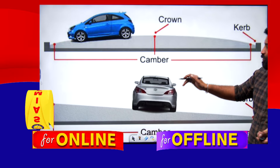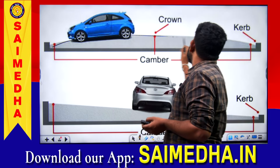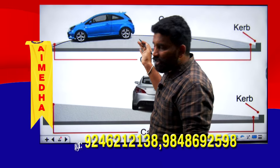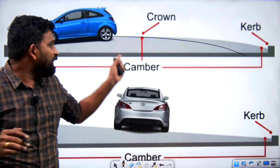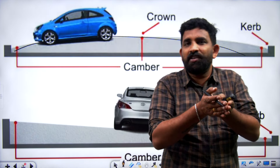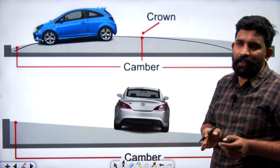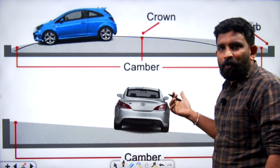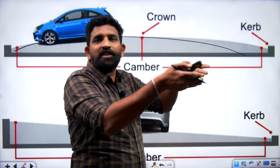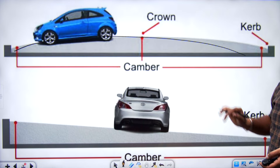We need to start from the cross-sectional elements. If you observe the image here, we will try to understand the cross-sectional slope. What is the cross-sectional slope? What is the advantage of the cross-sectional slope? How do we provide the cross-sectional slope? We will discuss this in more detail while talking about this subject called transportation engineering. That element is called camber.